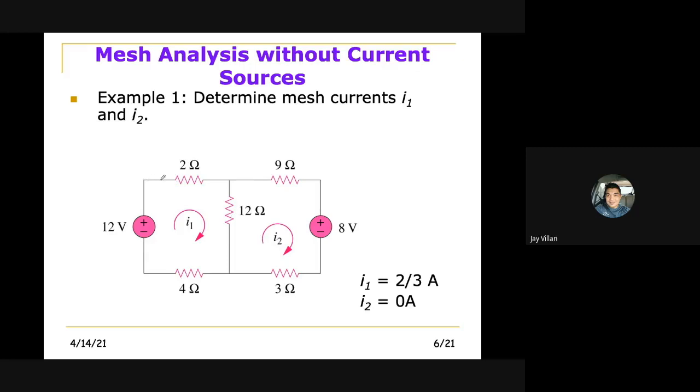Contrary to this one, this is a loop. So we cannot call this a mesh because it contains two loops within it. Therefore, we do not use this loop in mesh analysis. You only consider these two loops, meshes, which loops or mesh loops which does not contain any other loop that we call meshes.